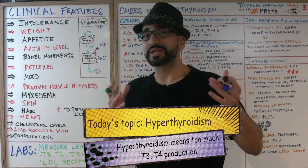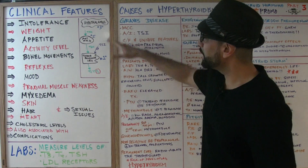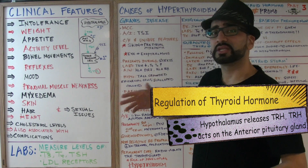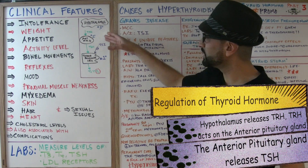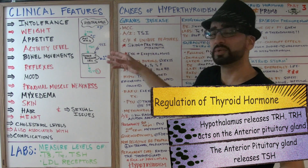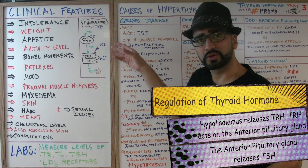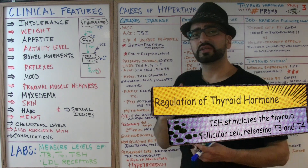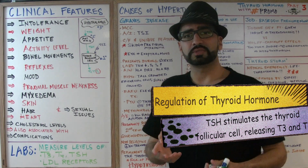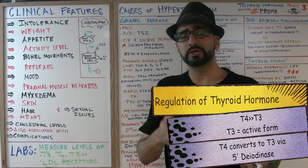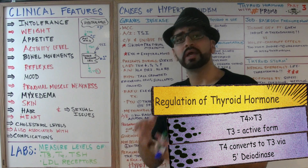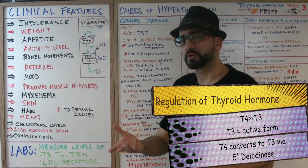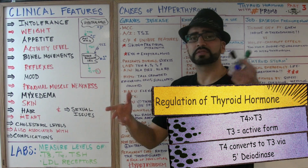To remind you, the hypothalamus — the control center of the brain — releases TRH (thyroid releasing hormone), which stimulates the anterior pituitary gland to release TSH (thyroid stimulating hormone). TSH then stimulates the thyroid follicular cell, releasing large amounts of T4 and T3. T4 is secreted in greater amounts and is converted into T3 by an enzyme called 5'-deiodinase. T3 is the biologically active form.